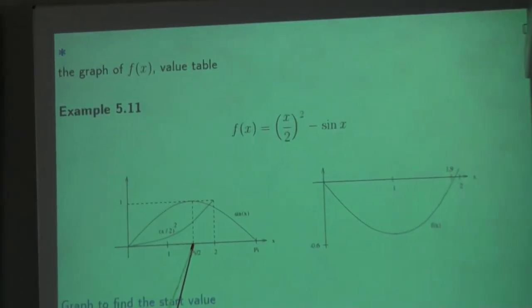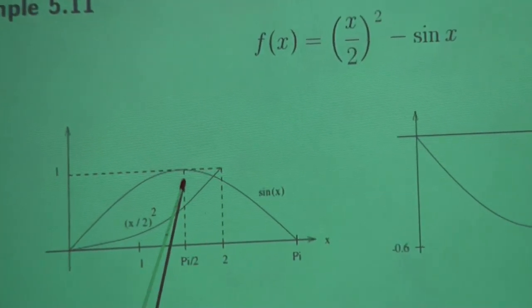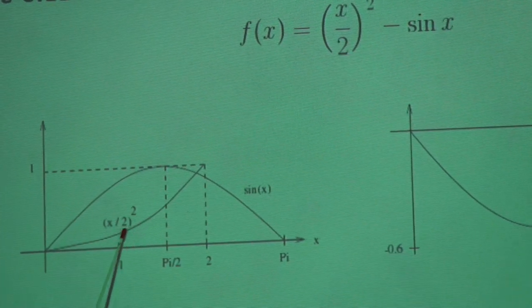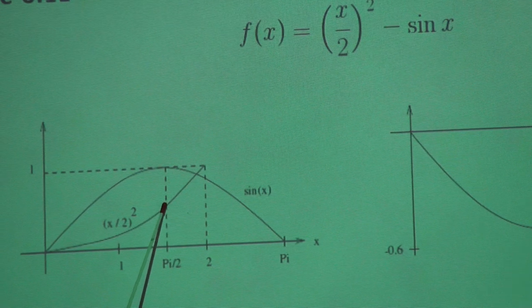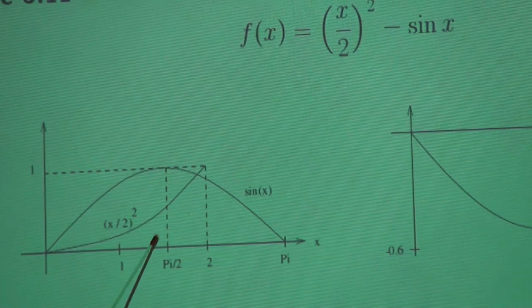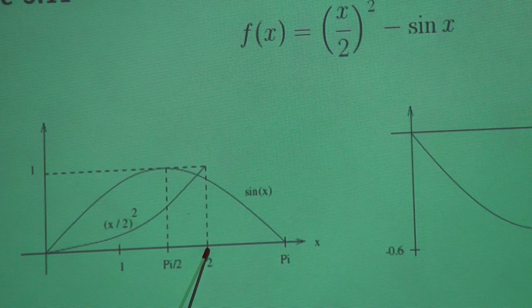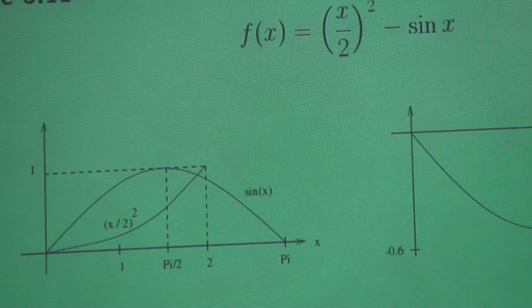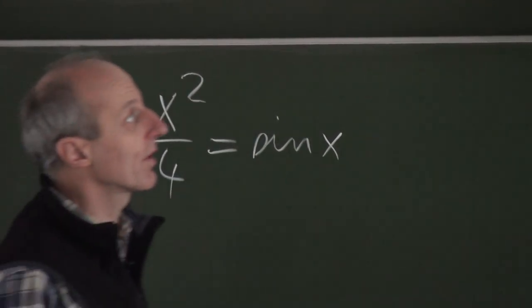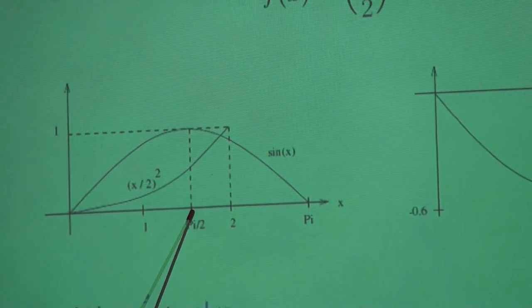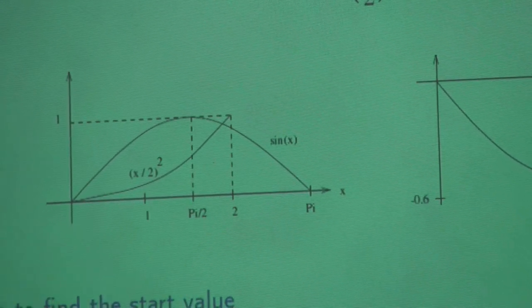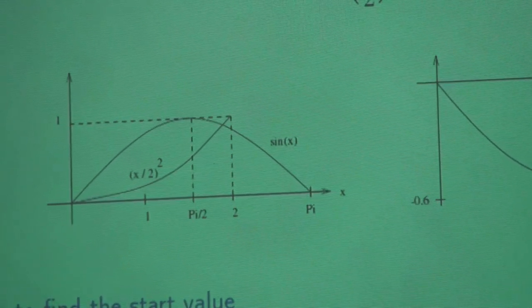Because we know the sine at pi half is one, and the parabola is below one. And for x equal two, the left hand side is equal to one and the sine is smaller than one. So this intersection must be in this interval, between pi half and two.